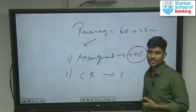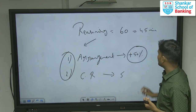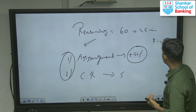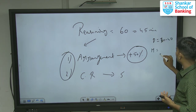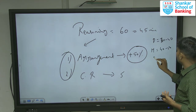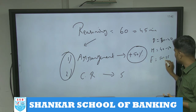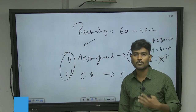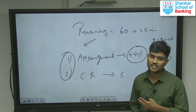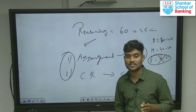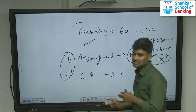They ask a minimum of five questions from critical reasoning. If you are very strong in these two topics — arrangement and critical reasoning — you can attempt more than 50% of the questions. If the paper is difficult, you might secure 30 to 40 questions; if moderate, 40 to 50; if very easy, 50 to 55. However, RBI Grade B never asks easy questions — for the past six to seven years, they ask only difficult questions, so consider only difficult and moderate levels.